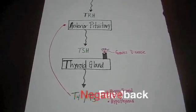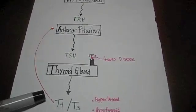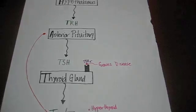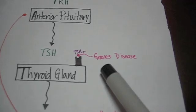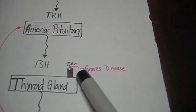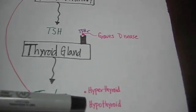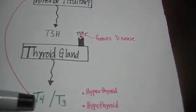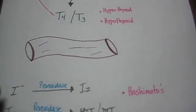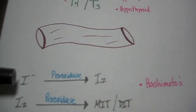The negative feedback loop of the thyroid hormone is as such: an excessive amount of T4 and T3 in the bloodstream will negatively feed back to the anterior pituitary to decrease the amount of TSH. In Graves' disease, antibodies directly stimulate the TSH receptor on the thyroid gland, producing an excessive amount of T4 and T3. Hyperthyroidism and hypothyroidism are defined as an excess or deficiency of T4 and T3. Hashimoto's also affects the thyroid gland — it attacks the enzyme peroxidase, which is critical in two reactions inside the thyroid gland.